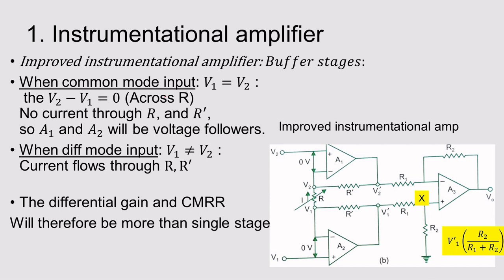We will now see the working in two cases. First, when V1 equals V2: if V1 equals V2, then V2 minus V1 equals 0, so the current across R' and R will be 0. In this condition, the circuit is acting as voltage followers. In the second case, when V1 is greater than V2 or V2 is greater than V1, the current moves from V1' to V1, then from V1 to V2, and then from V2 to V2'. The current flows through R and R'.